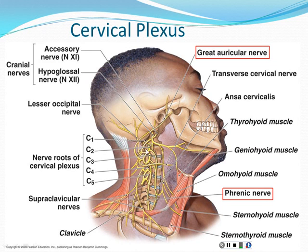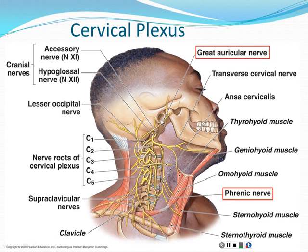What emerges from this mixing of spinal nerves are the nerves that actually go somewhere and do something. In this picture there are two red boxes. The great auricular nerve courses just anterior to the external acoustic meatus — just in front of the ear hole — and it goes up to supply the temporalis muscle, one of the chewing muscles.